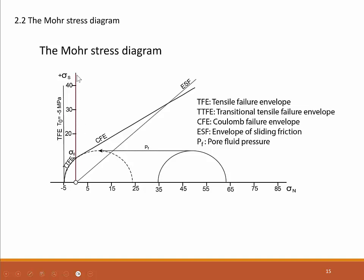On the Y axis of the diagram we see the shear stress, usually given in megapascals. Sometimes you will find older diagrams that still use kilobars. On the X axis we see the normal stress, also usually in megapascals, with a positive part and a negative section on the left-hand side of the origin. The negative part for the normal stress indicates tensile stresses; the positive part indicates compressive stresses.